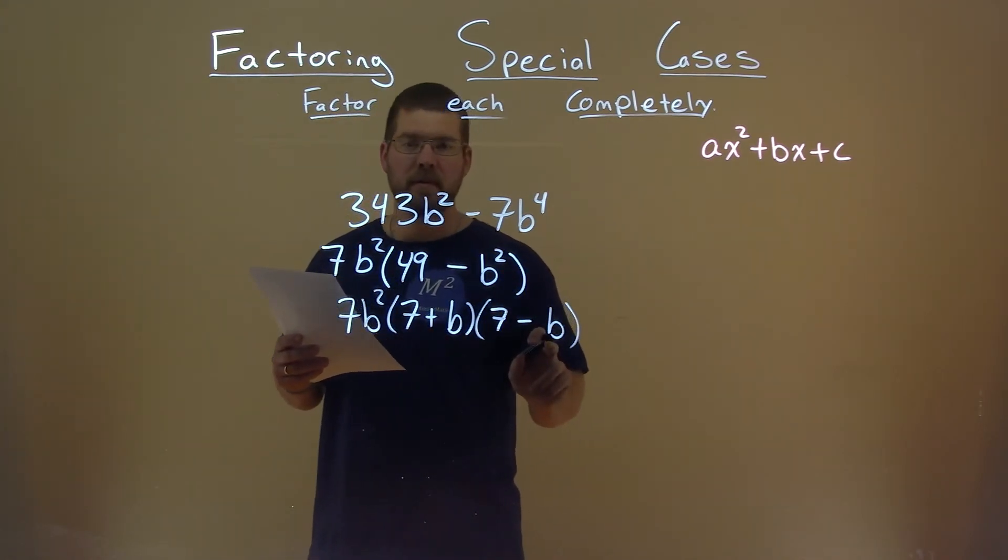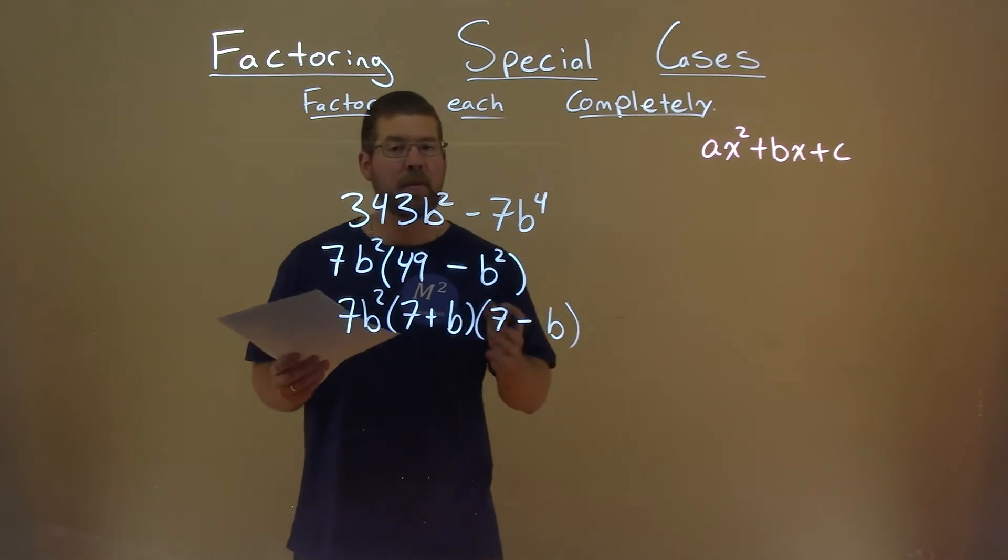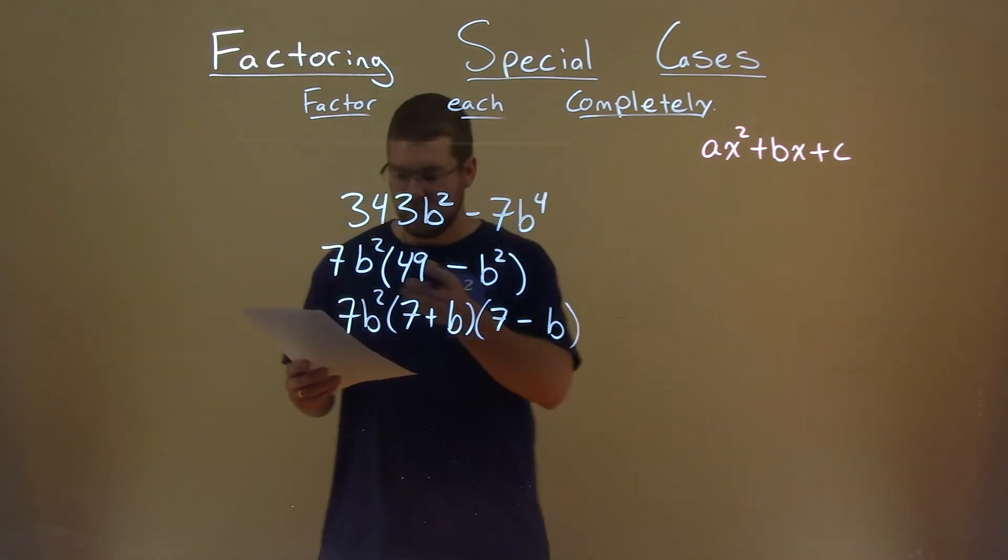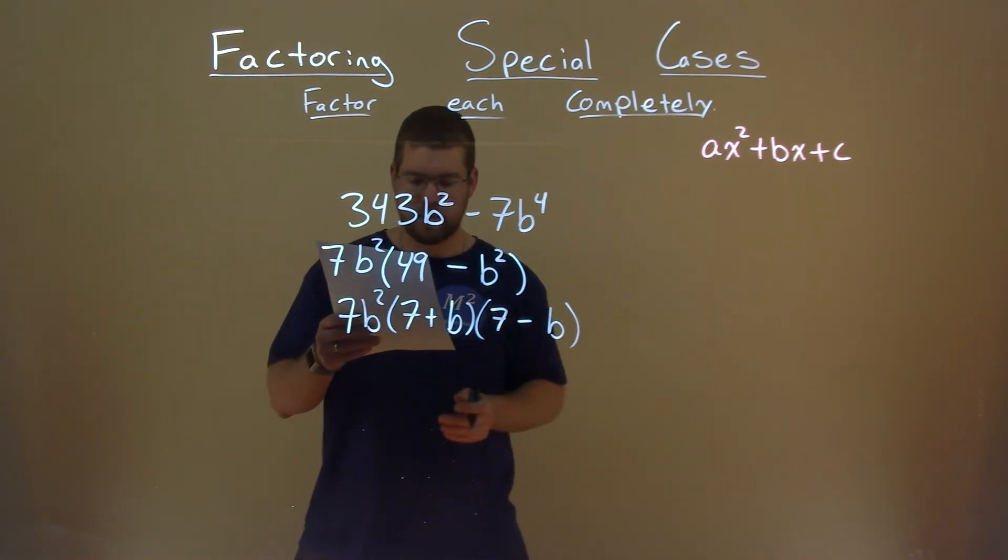7 times negative b is a negative 7b. b times 7 is a positive 7b. Add them together, you get 0. So now we actually have our final answer full of 7s and bs. 7b squared times 7 plus b times 7 minus b.